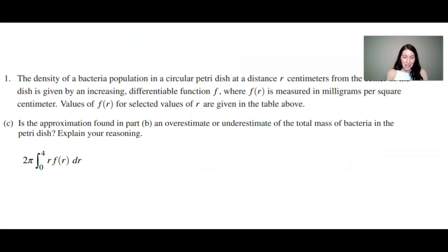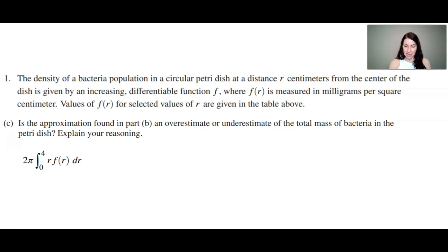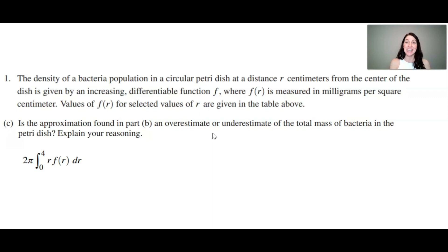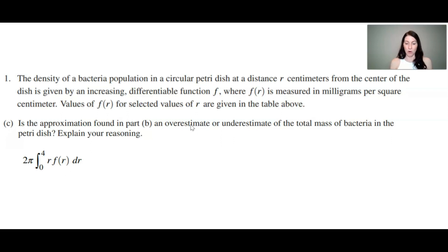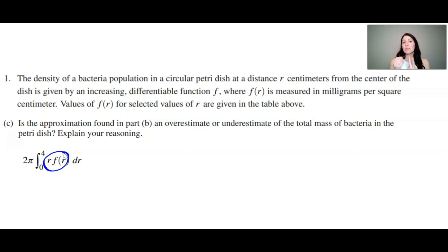Let's move on to part C. Part C asks: is the approximation found in part B — 269π milligrams — an overestimate or an underestimate of the total mass of bacteria in the petri dish? Remember, we were using a Riemann sum only to approximate the mass. To figure out if the approximation is an overestimate or underestimate, for right or left Riemann sums you look at whether the function r·f(r) is increasing or decreasing.